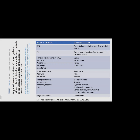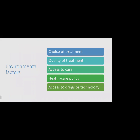Definite factors contributing to prognostication include clinician prediction of survival, performance status, signs and symptoms of cancer anorexia-cachexia syndrome, symptoms with independent prognostic values such as delirium and dyspnea, biological factors such as leukocytosis, lymphocytopenia, and CRP, and prognostic scores. Possible factors include patient demographics, tumor characteristics, signs and symptoms, and biological factors such as anemia, hypoalbuminemia, serum calcium and sodium levels, LDH, and other enzymes. Environmental factors affecting prognosis include choice of treatment, quality of treatment, access to care, healthcare policies, and access to drugs or technology.